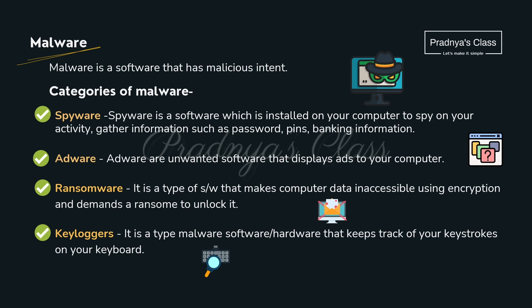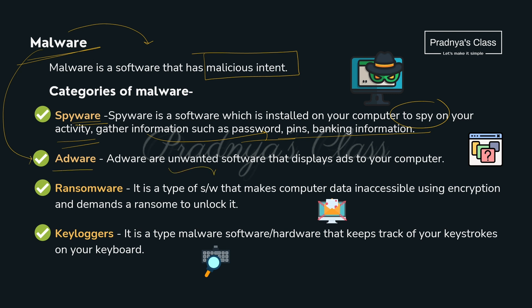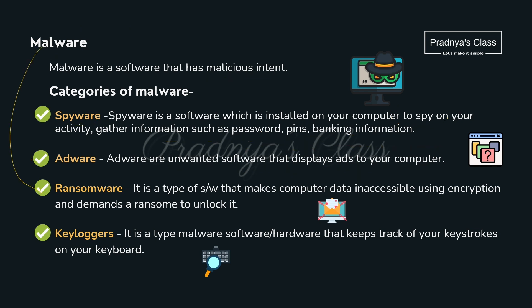Moving ahead to the third category of harmful programs: Malware — short for malicious software — which obviously has harmful intent. The first type is Spyware, which spies on your activity and can gather information like passwords, PINs, and banking information. The second type is Adware — unwanted software responsible for displaying ads on your computer. The third type is Ransomware: using encryption it makes your system data inaccessible, and to unlock it you need to pay a ransom.